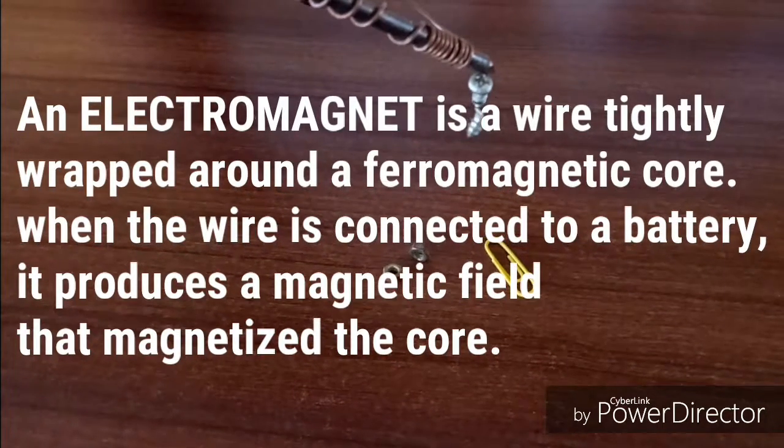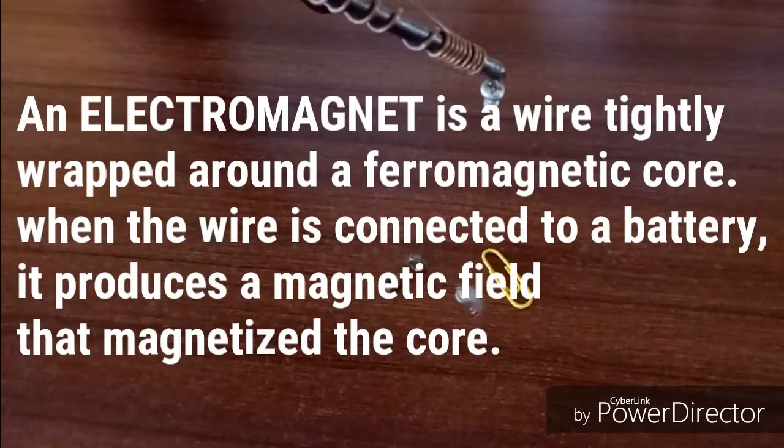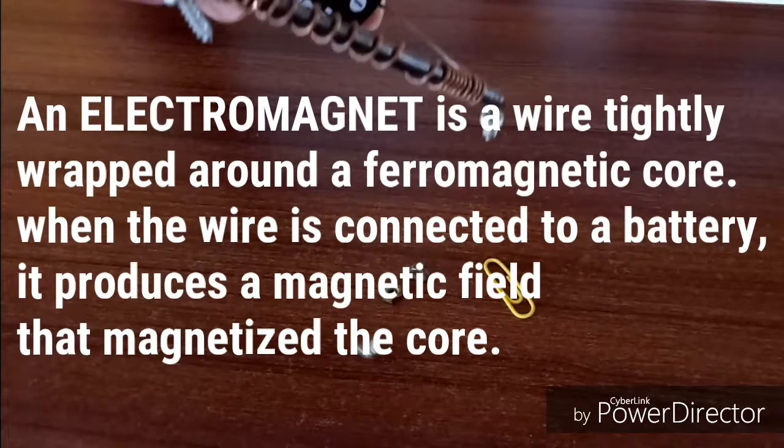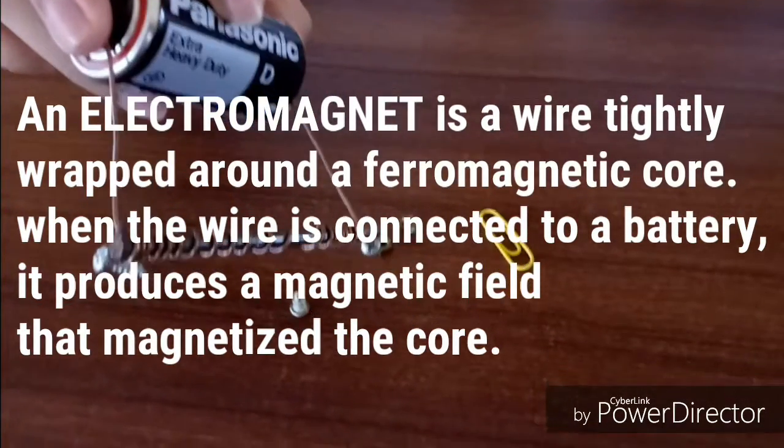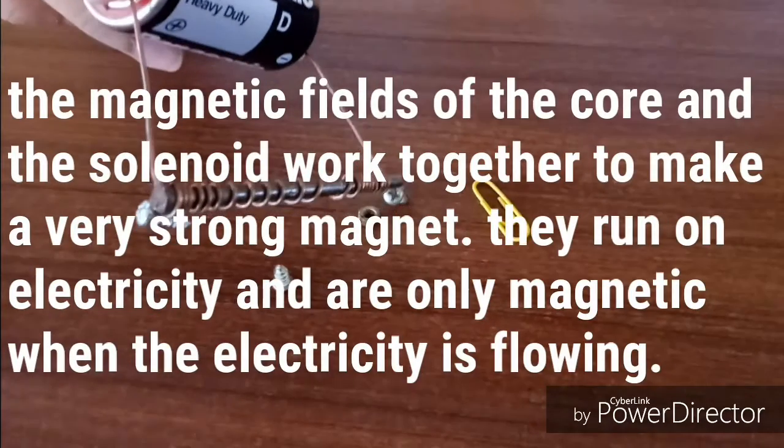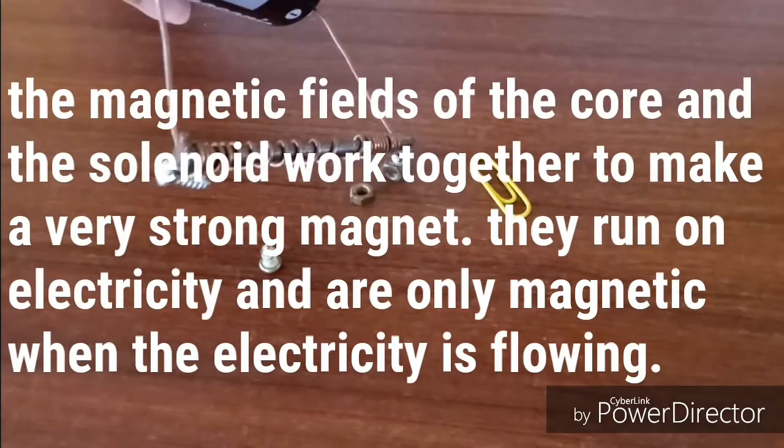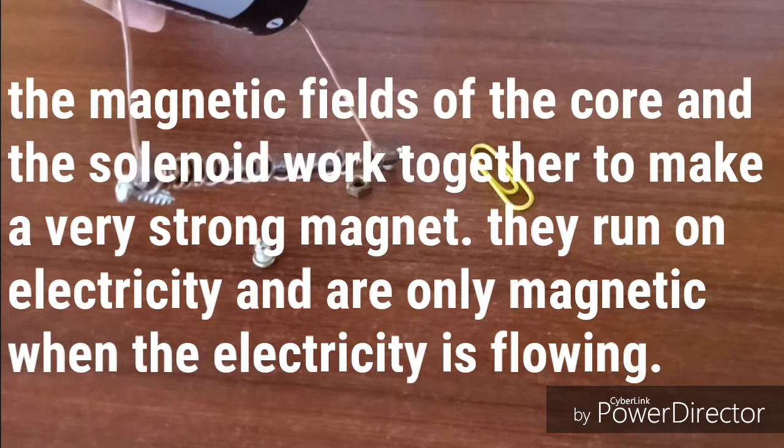An electromagnet is a wire tightly wrapped around a ferromagnetic core. When the wire is connected to a battery, it produces a magnetic field that magnetizes the core. The magnetic fields of the core and the solenoid work together to make a very strong magnet.